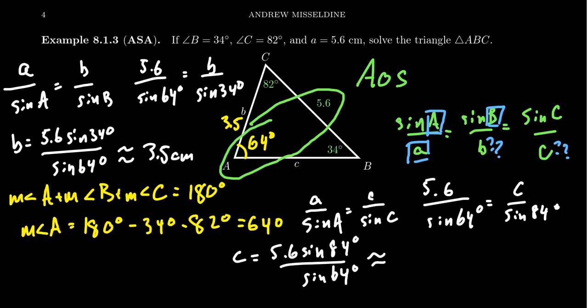Put this now into your calculator to get an approximation. Again, take 5.6 times it by sine of 82 degrees, hit equals, and then divide by sine of 64. And your approximation rounding to the nearest tenth of a centimeter, you're going to get 6.2 centimeters right like so. So c turns out to be 6.2.